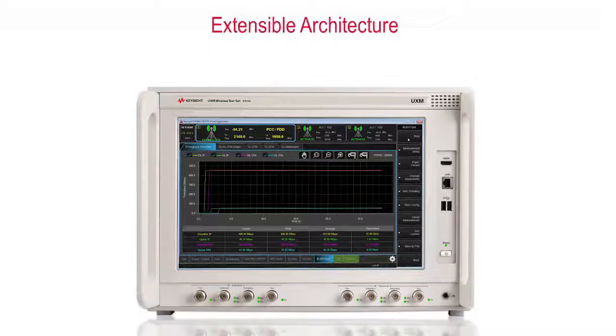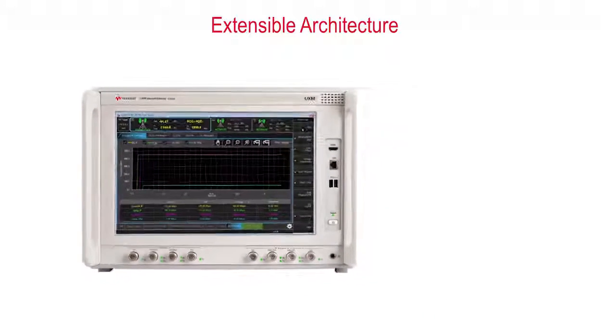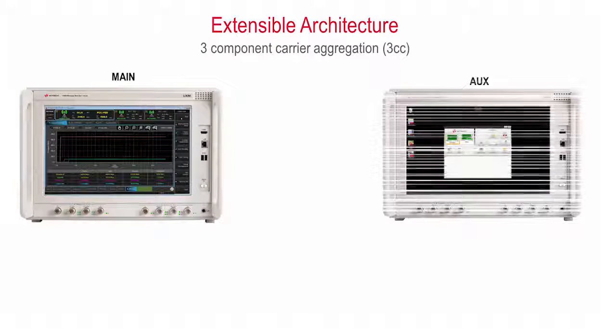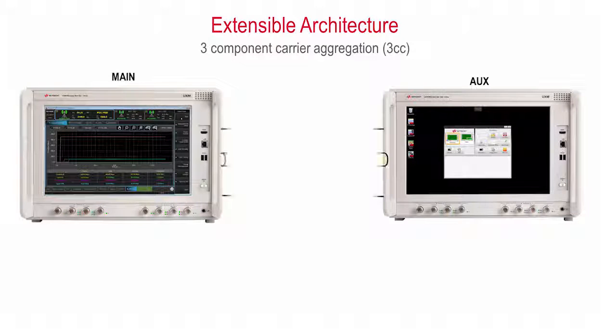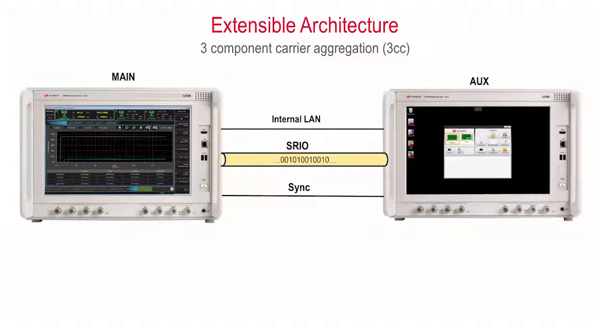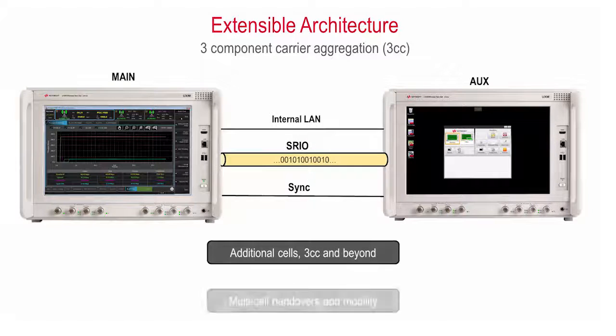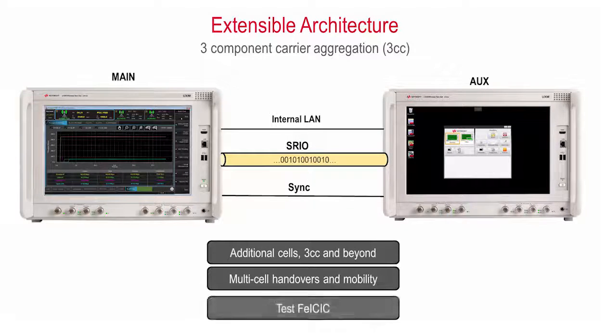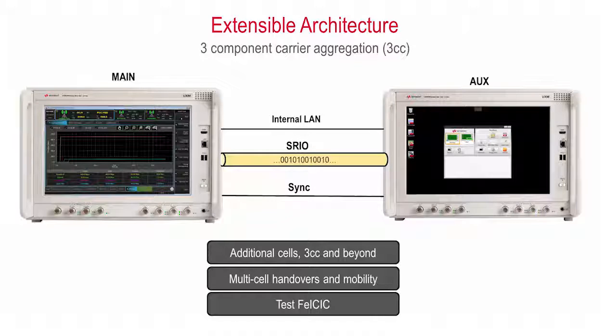The UXM's powerful and extensible architecture and high-speed interconnects allow you to go beyond two cells. You can seamlessly connect two or more UXMs to add component carriers for increased data rates or additional cells for multi-cell handovers and mobility and for testing with multiple aggressor cells.